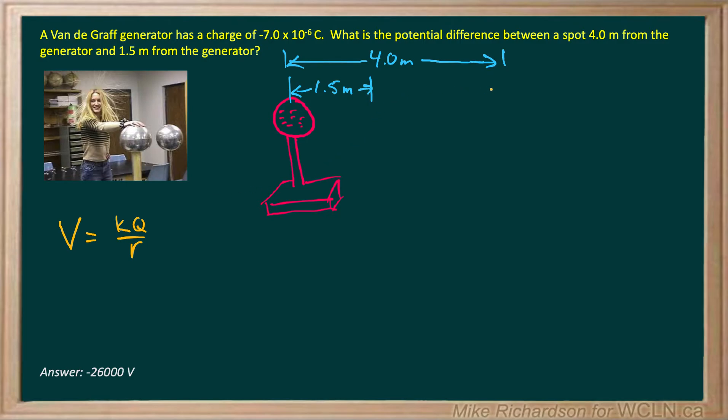Now we're going to figure out what the potential difference is between a spot 4 meters away. So we always measure to the center of the sphere. So we'll call that spot A all the way to spot B. So this is my initial potential. This is my final at spot B. And we're trying to find out the potential difference.